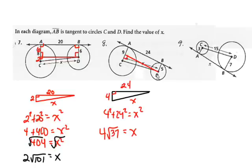For problem 8, you should have drawn a line parallel to the common tangent. The parallel segment is 24. With one radius being 5 and the other being 9, the difference is 4. So we have a right triangle with legs 4 and 24. Using the Pythagorean theorem and simplifying the radical, x equals 4√37.